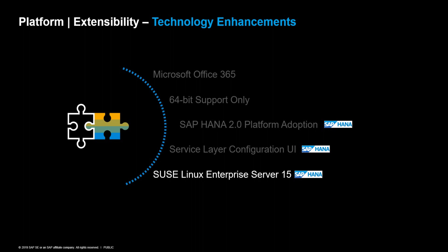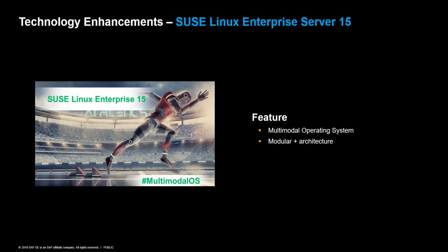We have adapted to the latest SUSE operating system version. SUSE Linux Enterprise Server 15 is the supported operating system for SAP Business One 10.0 for SAP HANA. It is a multi-model operating system supporting physical, virtual, cloud enablement, or software-defined environments. In its modular architecture, everything is a module, so you can get product updates and patches more frequently.